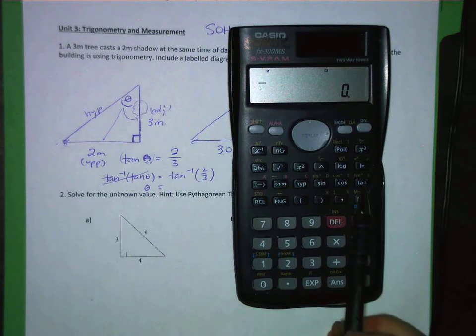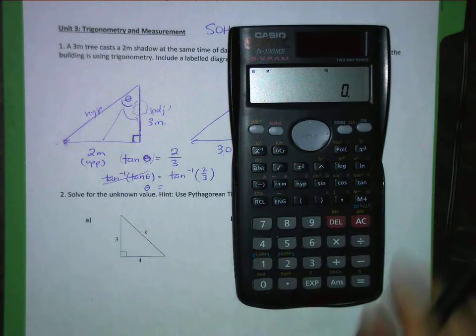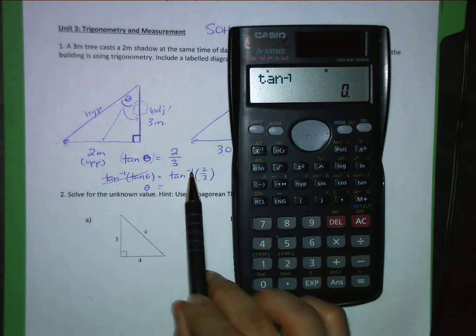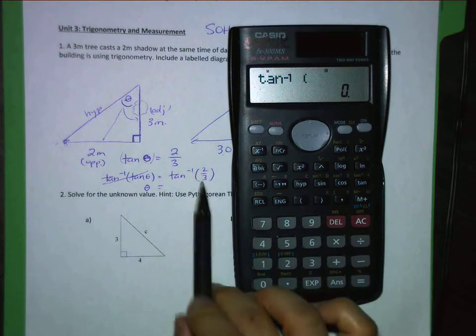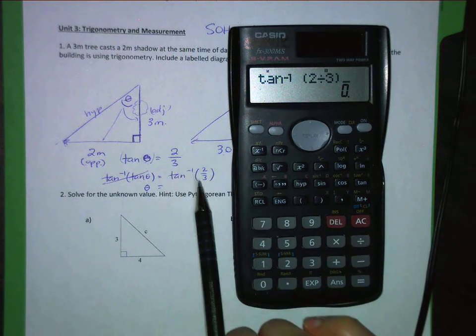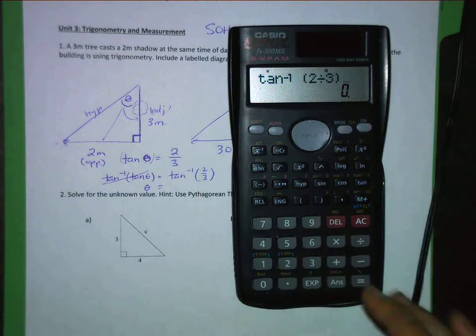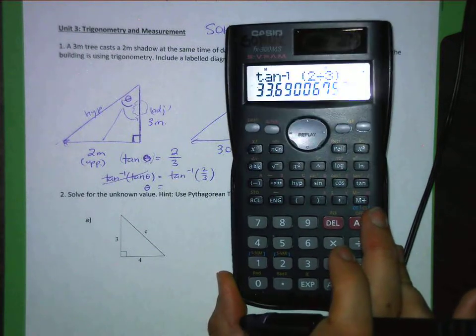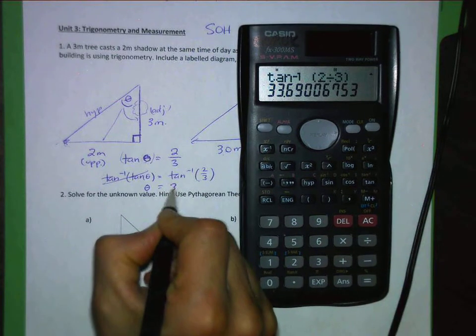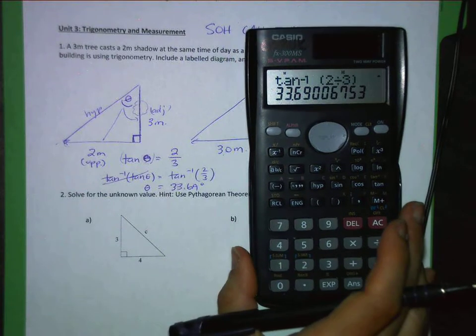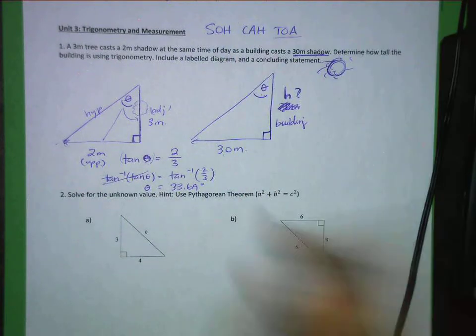So I need tan inverse and tan inverse is here and in orange. Alright. So I need to use my shift button or my second function. Hit that and I'll see tan with a negative 1. That's that. And then I'm going to use a bracket and say 2 divided by 3. Close the bracket. So it looks almost exactly like that except that the fraction is done a little bit differently. And that's an angle. So 33.69. I'm going to write that down. I'm going to leave four digits because I'm not done. So I'm not going to round this now.